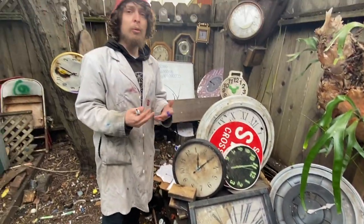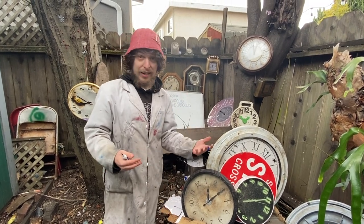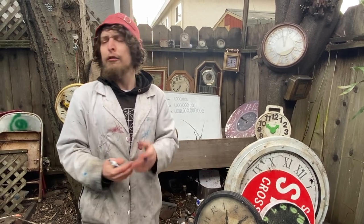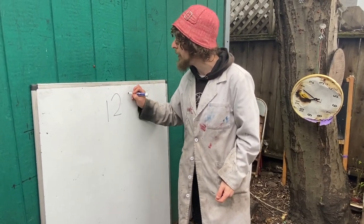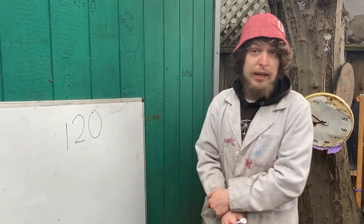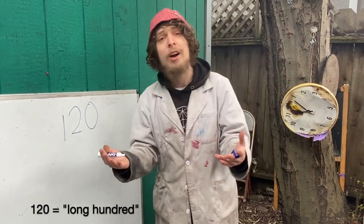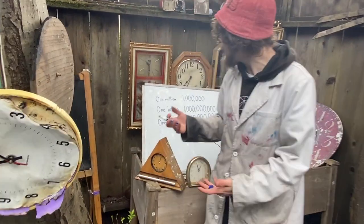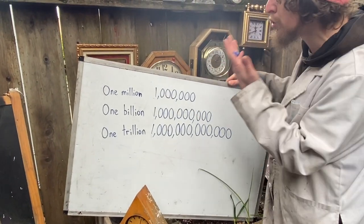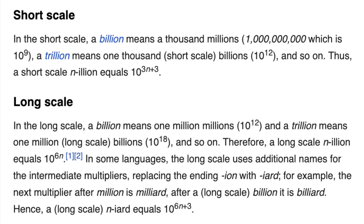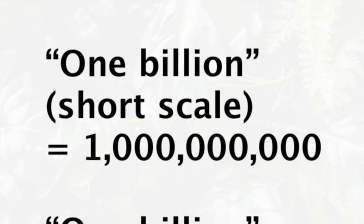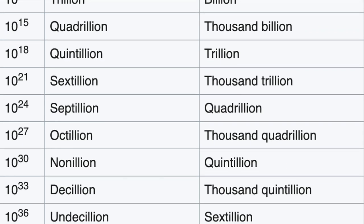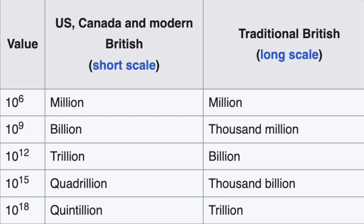To be more specific, we'll be analyzing it in modern American English, because English isn't one steady fixed thing. It's changed a lot over time and is different in different regions. For example, the number 120 used to be called 100 in many places, and then became more known as the long hundred — a term I think we should bring back. Some places use a system called the long scale, where one billion would refer to a different number, but since the short scale is the one I'm more familiar with, that is what we'll be sticking with today.